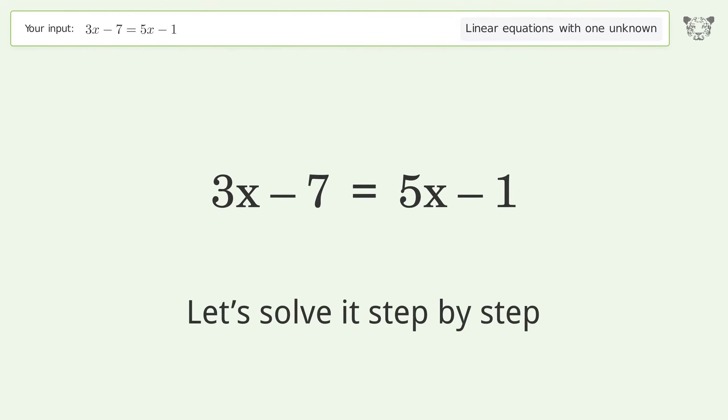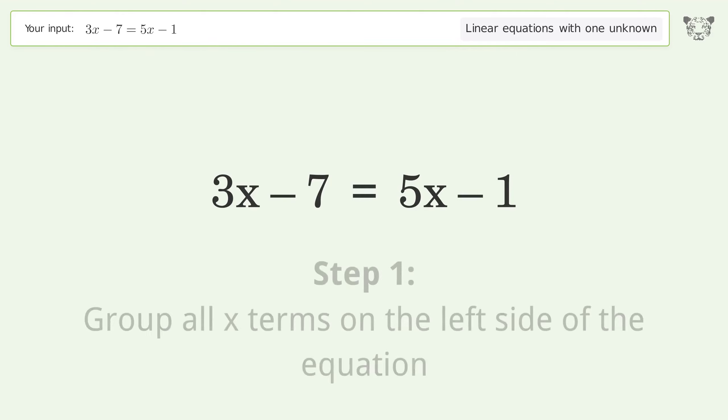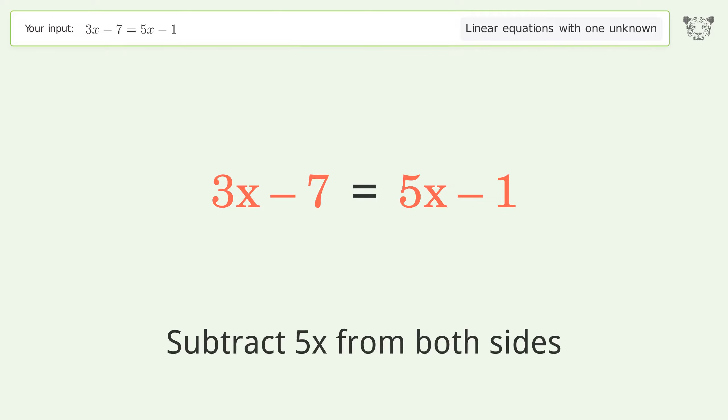Let's solve it step by step. Group all x terms on the left side of the equation. Subtract 5x from both sides.